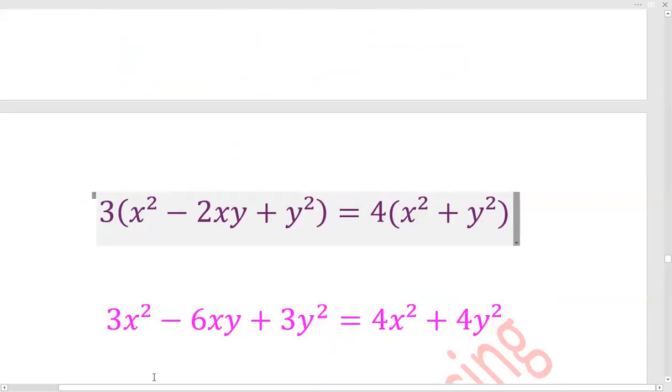3 into x square minus 2xy plus y square is equal to 4 into x square plus y square. 3 times 3 gives 3x square, minus 3 times 2 gives 6xy, plus 3 times 3 gives 3y square is equal to 4x square plus 4y square.